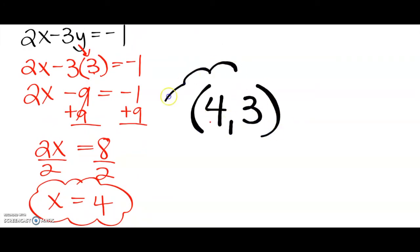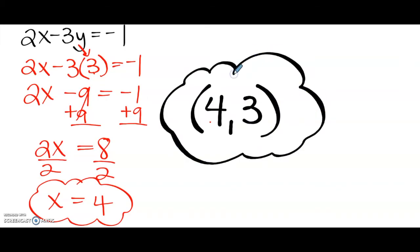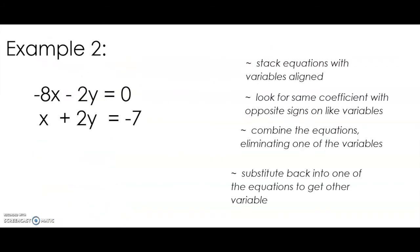So our solution is Y equals 3, X equals 4 — our solution is (4, 3). That is going to be our point of intersection for our system of equations. Let's try another example. Remember, we need to stack the equations — X's, Y's, equal signs, and constants are stacked up. We're looking for the same coefficient with opposite signs on like variables. Here I can see I've got a positive 2Y and a negative 2Y, so this time we're going to eliminate Y.